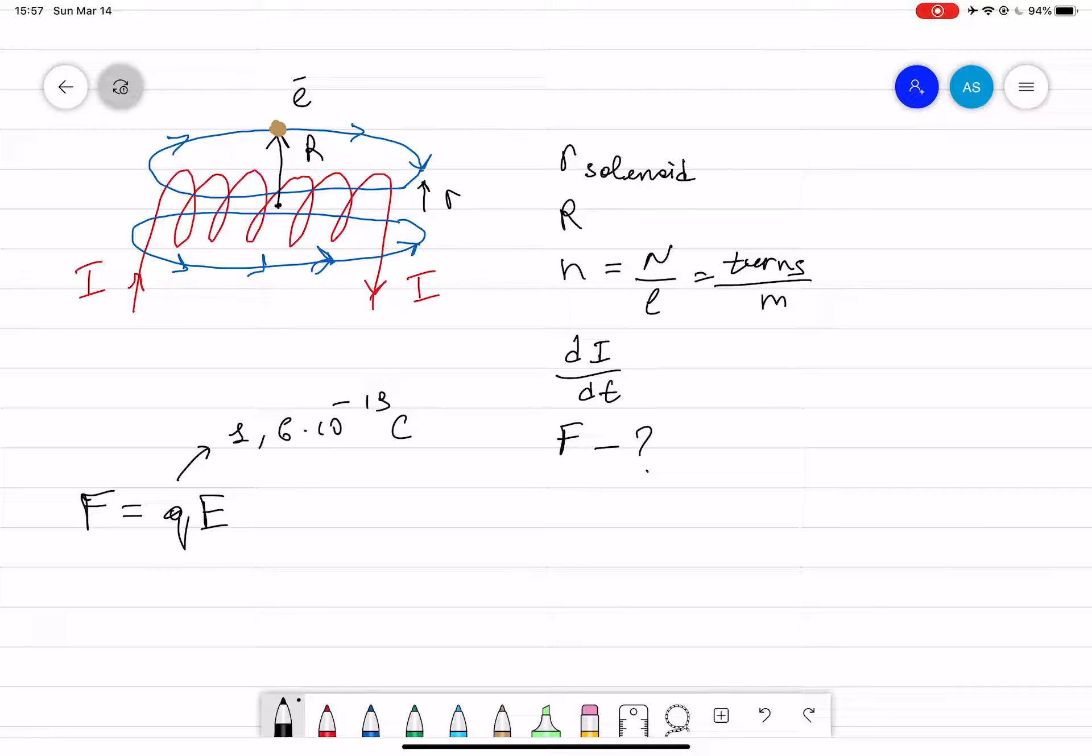Now how can we find the electric field? The formula for that one is: EMF equals E times 2πR. That is also equal to dΦ divided by dt.